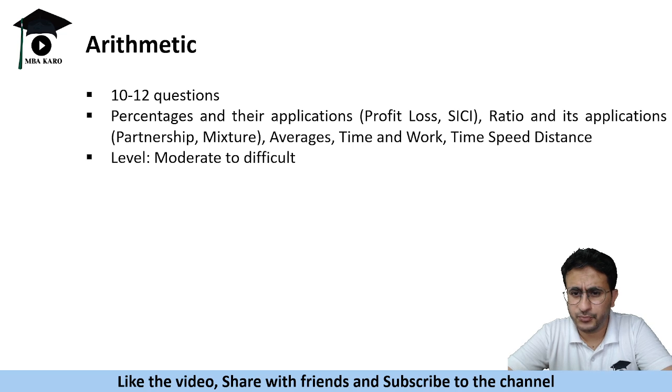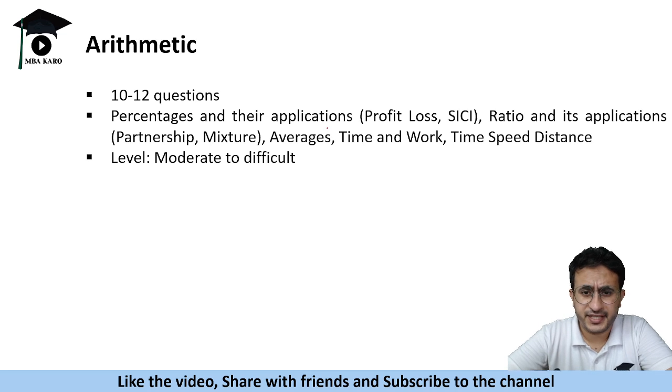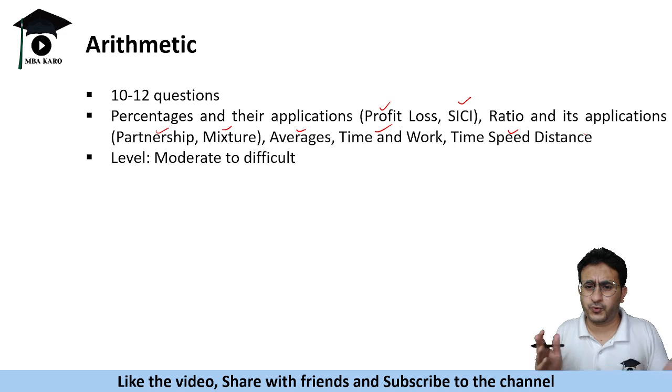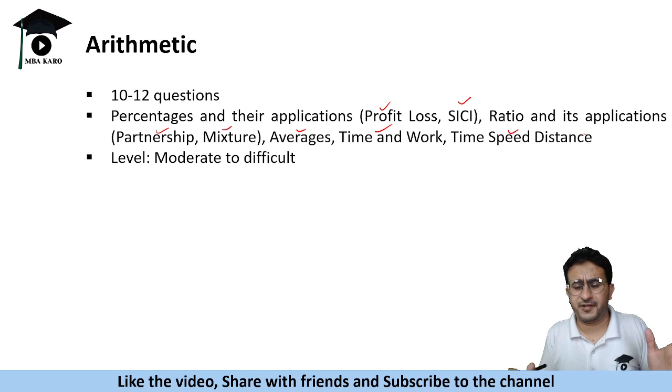Then arithmetic is a significant portion of the examination around 10 to 12 questions are from arithmetic itself. You get questions on percentages and their applications like profit, loss, simple interest, compound interest, ratio and its applications like partnership, mixture, averages, time and work, time, speed, distance. All these topics are tested upon. Some topics you might get two to three questions also. Let us say one person might encounter three questions on simple interest and compound interest or another person might have two or three questions on mixture and alligation. Some people might have two to three questions on time and work. Touching all these topics you get collectively around 10 to 12 questions.